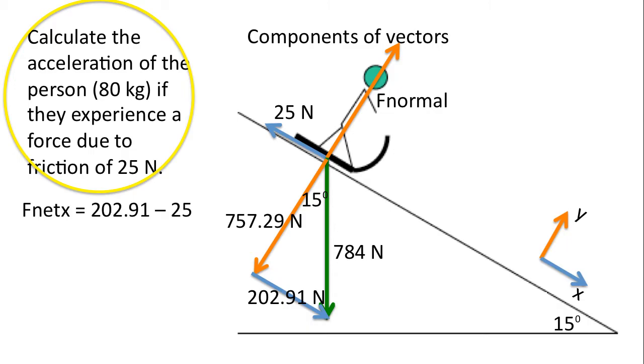We're going to write an f net x statement. The f net x is equal to the force of gravity in the x direction. Force of gravity in the x direction. Subtract the force of friction. We do the difference. And recall that f net is always equal to ma. Solving for acceleration by substituting the mass, we end up with 2.22 meters per second per second.